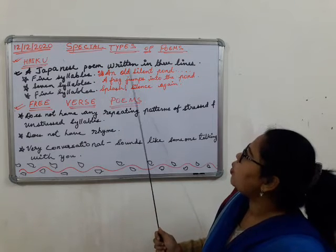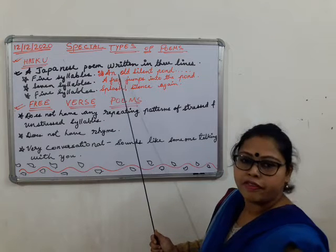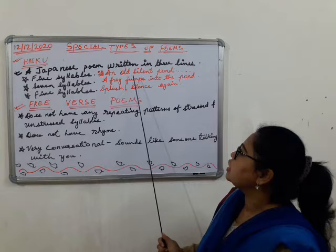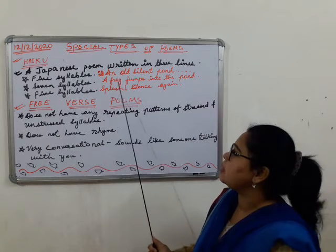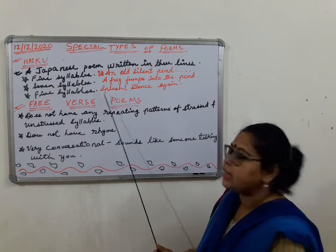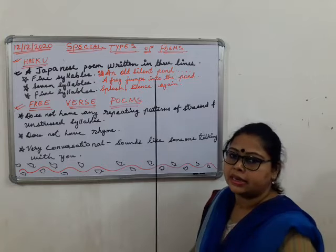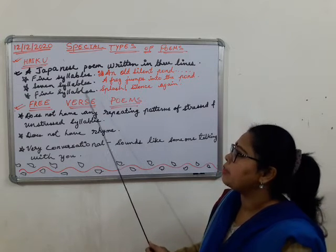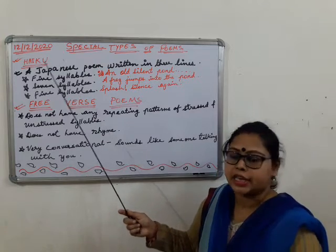Here is an example of haiku: 'An old silent pond' — five syllables. 'A frog jumps into the pond' — seven syllables. 'Splash, silence' — five syllables again. Only three lines, written in Japan — this is known as haiku.